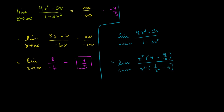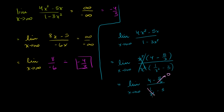The x squareds cancel out, so this equals the limit as x approaches infinity of 4 minus 5 over x, all over 1 over x squared minus 3. As x approaches infinity, 5 over x approaches 0 and 1 over x squared also approaches 0. So all you're left with is 4 over negative 3, which is negative 4 thirds. So you didn't have to use L'Hôpital's rule for this problem.